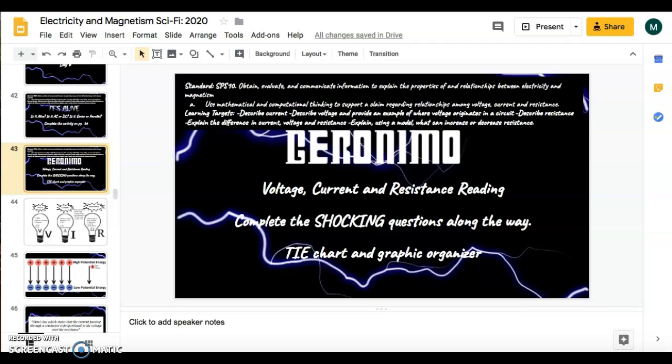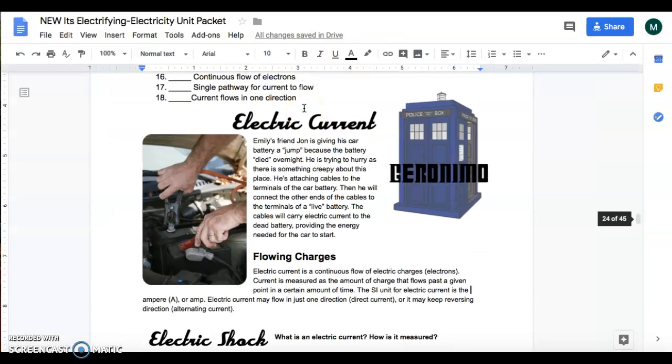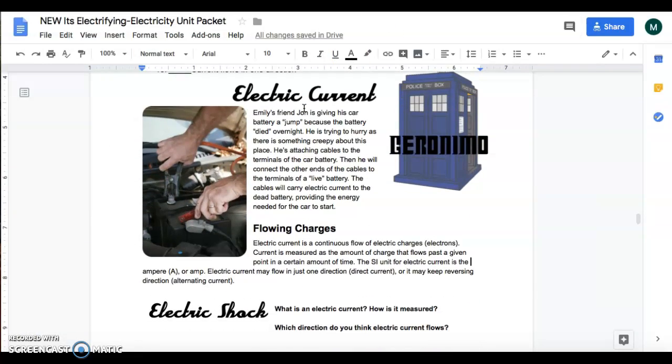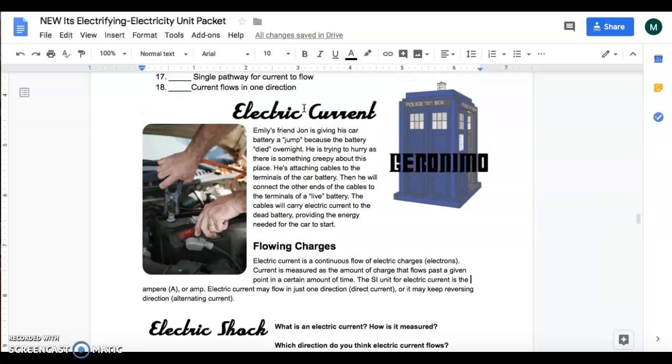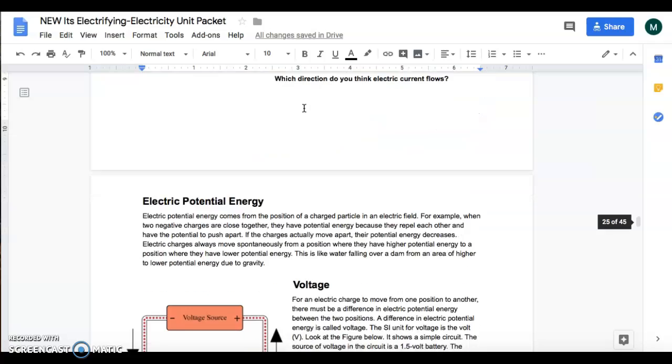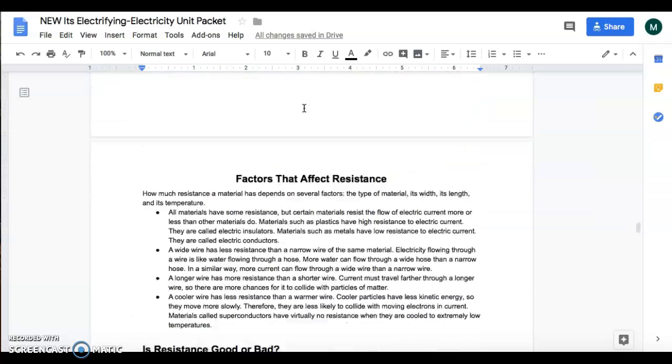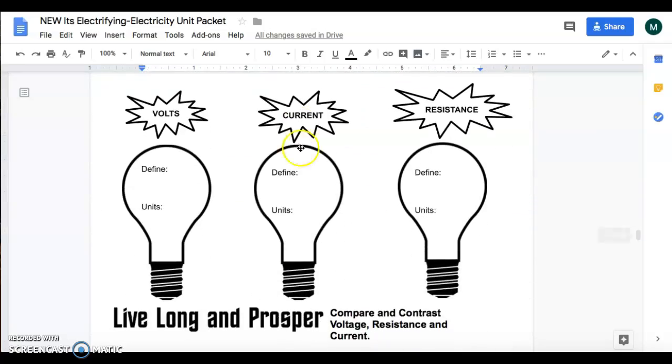What you're going to need to do is turn to page 36. I realized that I took that up the other day so you'll need to make sure that you get that from the front. I made a stack for each class period. On page 36 you'll see where it says electrical current. Now you guys are going to actually read through all of this and you'll then fill in the words at the bottom on each of the light bulbs.